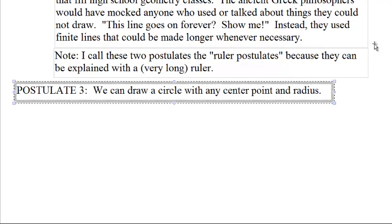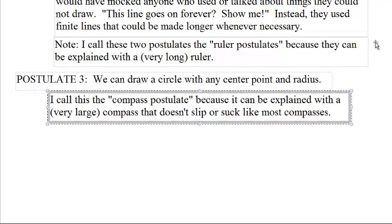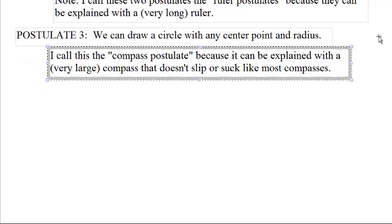Postulate 3: We can draw a circle with any center and radius. I call this a compass postulate because it can be explained with a very large compass, a good compass, one that doesn't slip or suck like most compasses. Not a north, south, east, west compass,